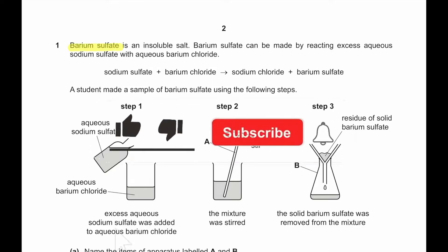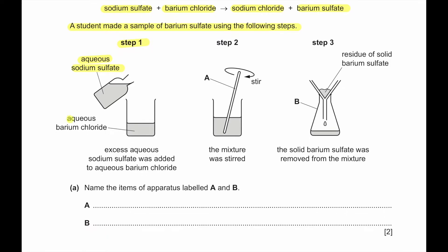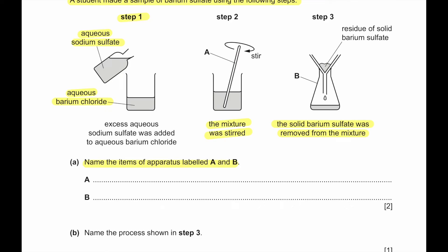Question number one. Barium sulfate is an insoluble salt. Barium sulfate can be made by reacting excess aqueous sodium sulfate with aqueous barium chloride. A student made a sample using the following steps. Step one: Aqueous sodium sulfate was added to aqueous barium chloride and then it was stirred. The mixture was stirred and then the solid barium sulfate was removed from the mixture by filtration. Name the items of apparatus A and B. We can see A is the apparatus that we are using for stirring. So this is the glass rod. And B is the conical flask that is holding that particular filter funnel.